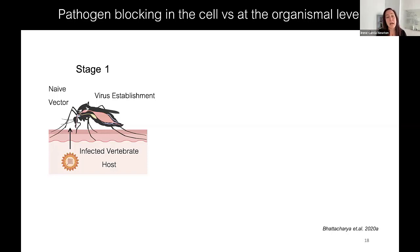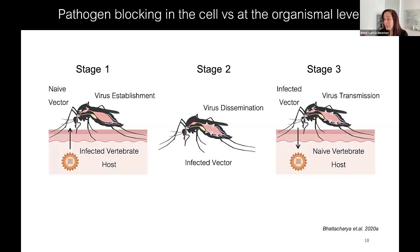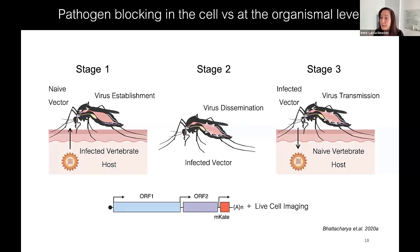In order for these viruses to establish infection, the mosquito must take a blood meal from an infected vertebrate host. The virus then has to disseminate in that infected vector — it has to cross the midgut, get to the hemolymph, and then get to the salivary glands to be transmitted to a naive vertebrate host and finish that cycle of infection and transmission.